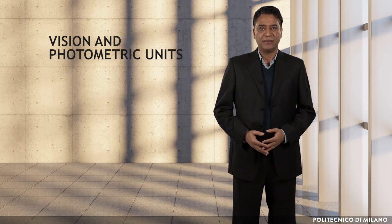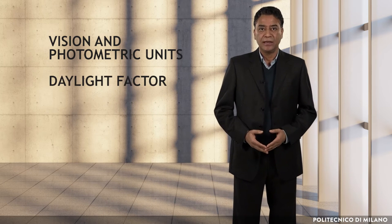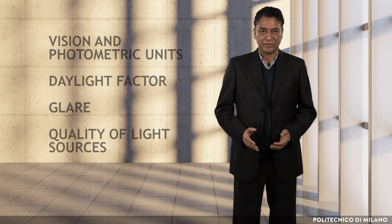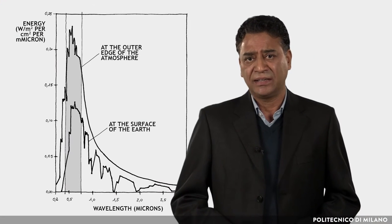In buildings, maintaining visual comfort means ensuring that people have enough light for their activities, the light has the right quality and balance, and people have good views. In this lecture, we are going to discuss vision and photometric units, daylighting factor, glare, and quality of light sources.